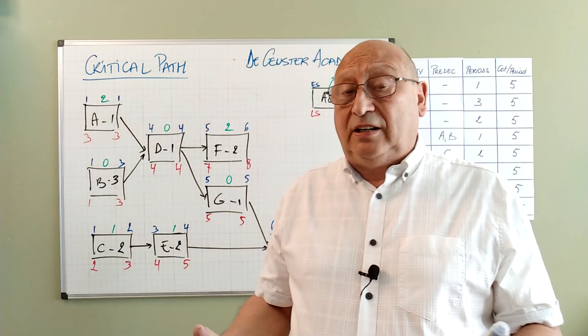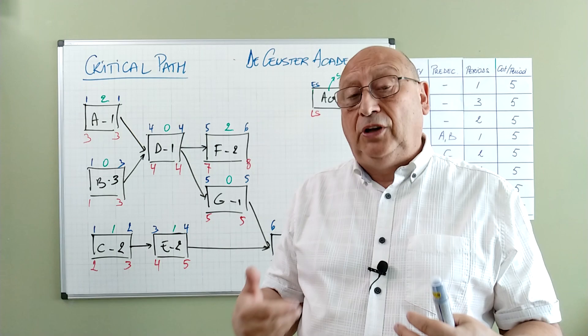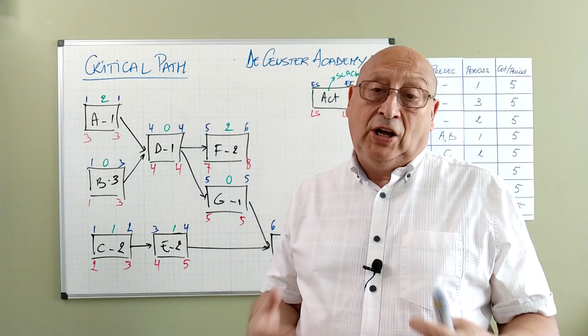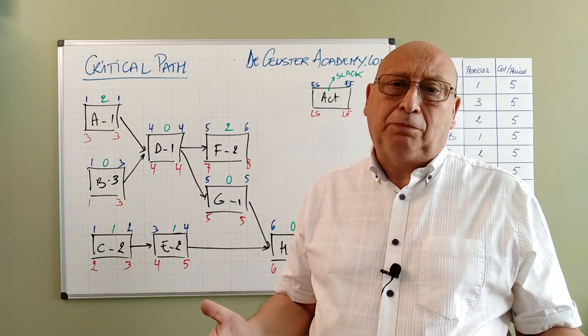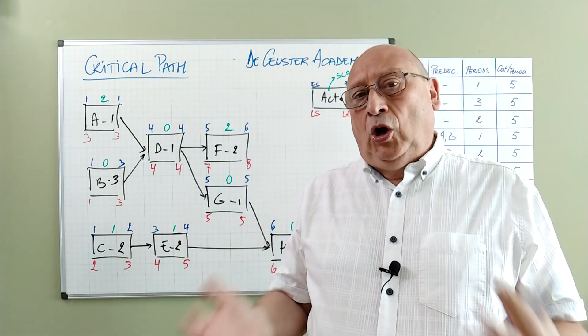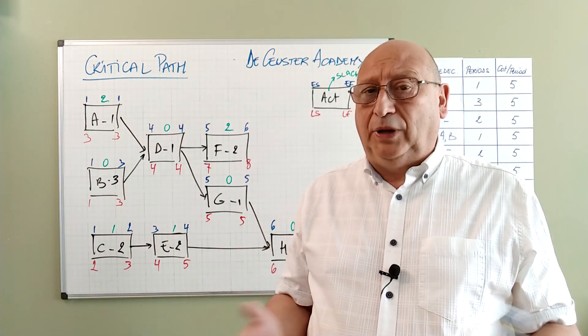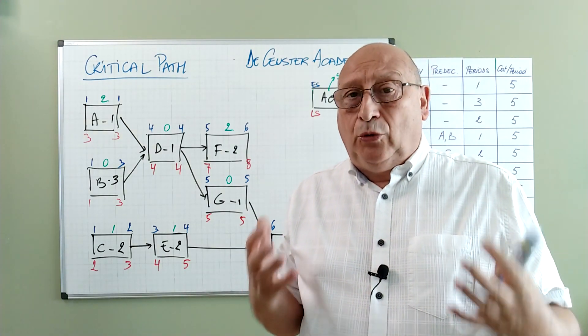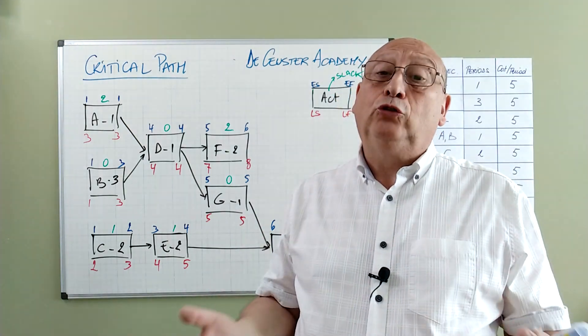Once we know the slack we can also determine the critical path by identifying the longest path. Basically we don't have to calculate the slack before. But if we have the slack it will help us. Anyway we have to find the longest path and how do we do that?